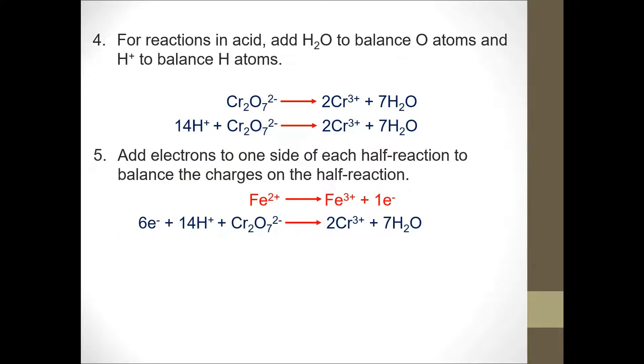For the second half equation, we have to add 6 electrons. Why? Dichromate has 2- plus 14+. This is actually positive 12. What about on the right? 2 times 3+ is 6+. So, 6+ on the right, 12+ on the left. How are you going to make it the same? By adding electrons on the left. Because when you add -6 with +12, you're going to get +6. That is balanced.